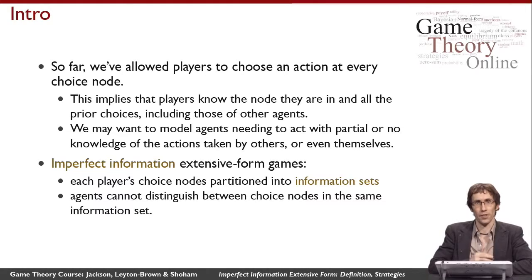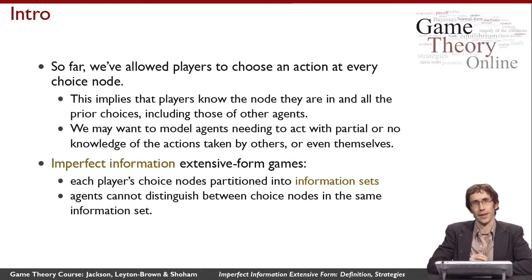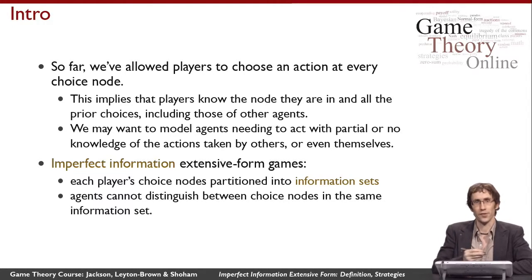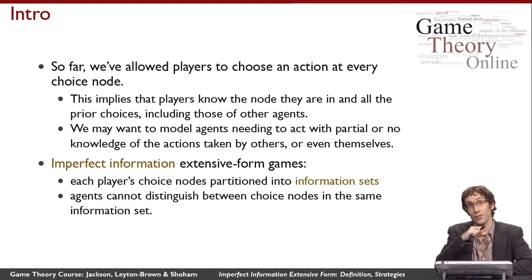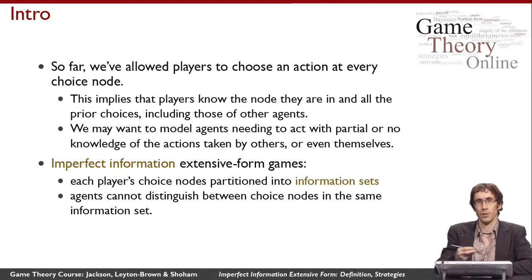In order to model this richer situation where players aren't able to observe everything that their opponents do, we're going to add something new to the game representation. We'll call it the imperfect information extensive form. The way this works is we take the old definition but say that players consider some choice nodes to be equivalent to each other — putting the set of choice nodes for a given player into equivalence classes.